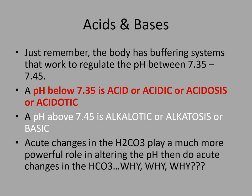So now we're getting to naming blood gases. The body has buffering systems that work to regulate the pH between 7.35 and 7.45. Below 7.35 is an acidosis; above 7.45 is an alkalosis. These are all synonyms — acidic, acidemia, acidosis; alkalotic, alkalemic, basic. Acute changes in carbonic acid play a much more powerful role in changing the pH than bicarb changes.